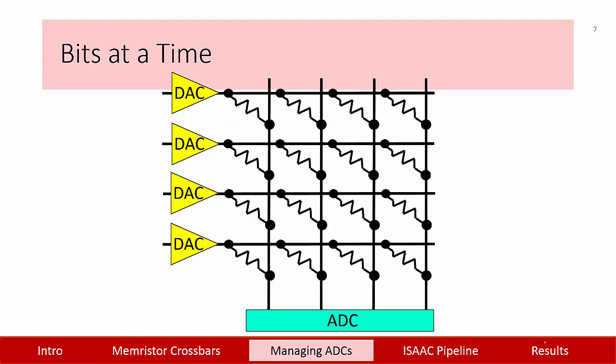The 16-bit input voltage is provided as 16 1-bit input voltages, provided sequentially as 1-bit values over 16 cycles. This results in a simple digital-to-analog converter for inputs and lowers the ADC resolution.